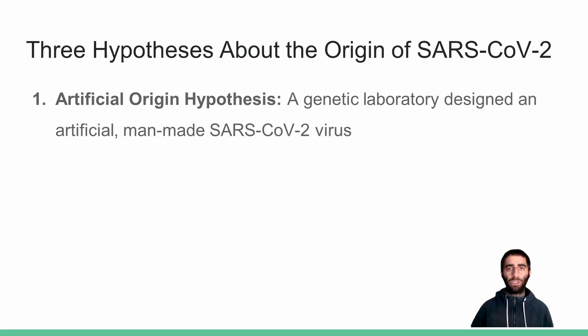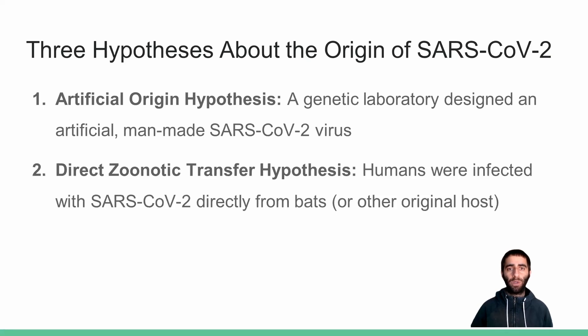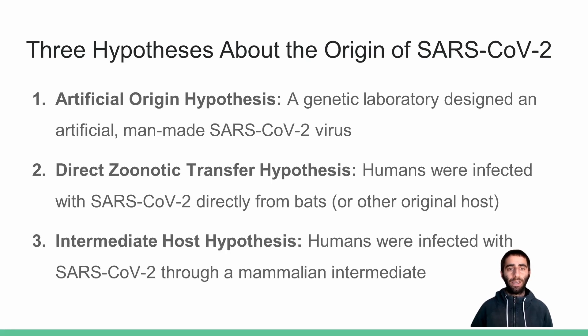First is the artificial origin hypothesis, which posits that a genetic laboratory designed an artificial, man-made SARS-CoV-2 virus. Second is the direct zoonotic transfer hypothesis, which says that humans were infected with SARS-CoV-2 directly from bats or from some other original host. Last is the intermediate host hypothesis, which guesses that humans were infected with SARS-CoV-2 through a mammalian intermediate.